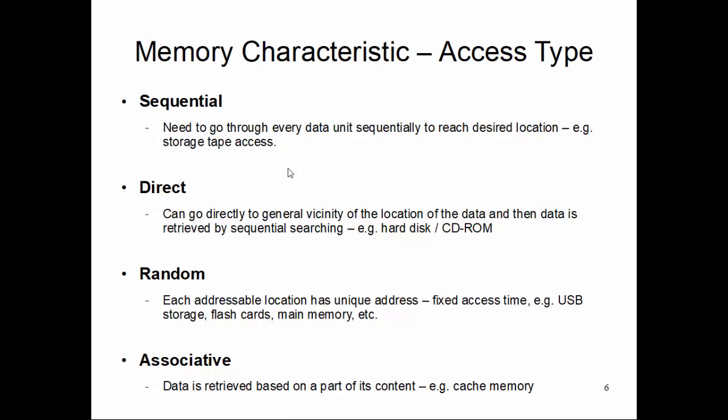Associative data is where data is retrieved based on a part of its content. It is not only the address, but also data retrieval is based on the part of the content itself. This definition is not will not be clear right now, but wait for our cache memory discussion and this associative type, what is meant by the association, it will be clear once we go through the cache memory lectures.